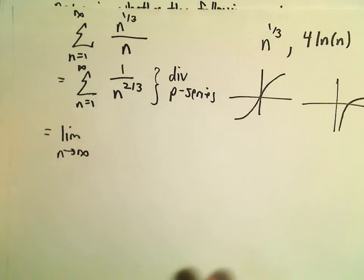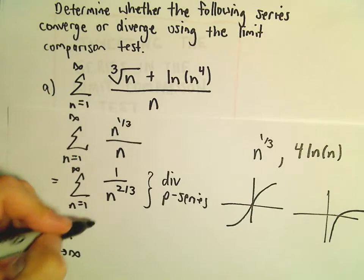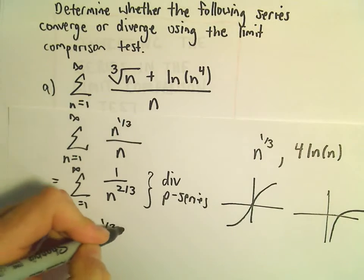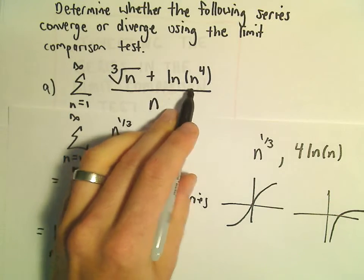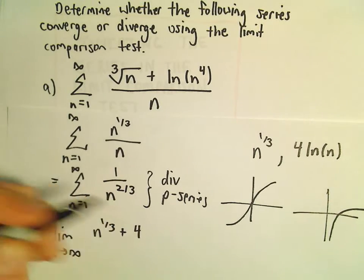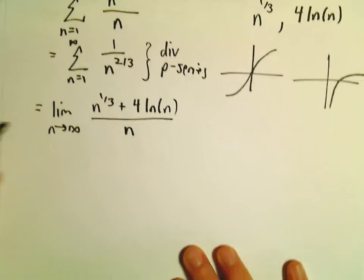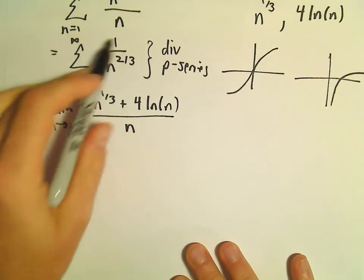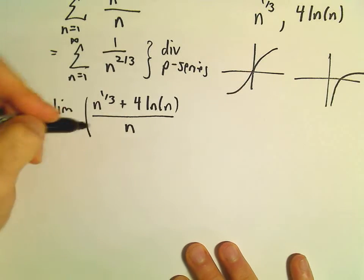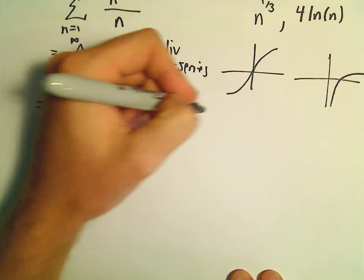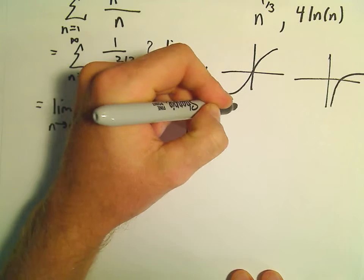So we'll have the limit as n goes to infinity. Again, we've got the cube root of n, so n to the 1/3 plus ln of n to the 4th, which I'm going to write as 4 times the natural logarithm of n, all over n. And we would divide by 1 over n to the 2/3, so equivalently we can just multiply by n to the 2/3 over 1.